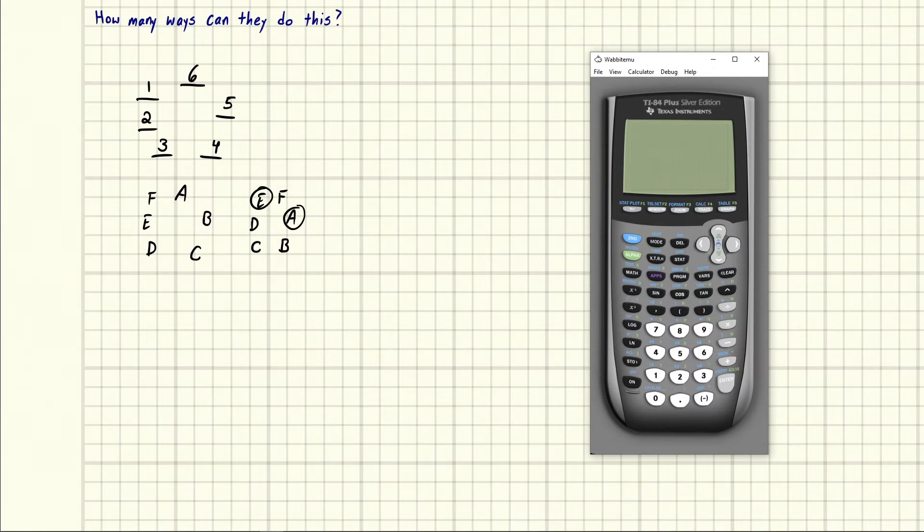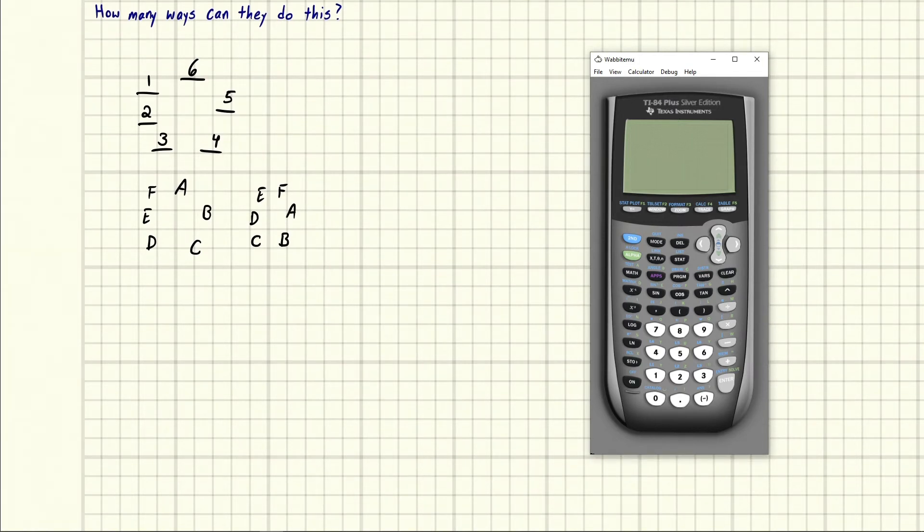...because who you're sitting next to didn't change. F is still next to E and A in both examples. And so what we're going to do, and what most people would consider different, is when the arrangement itself has actually changed. F is in a new position relative to E and A. It's not in between them anymore.